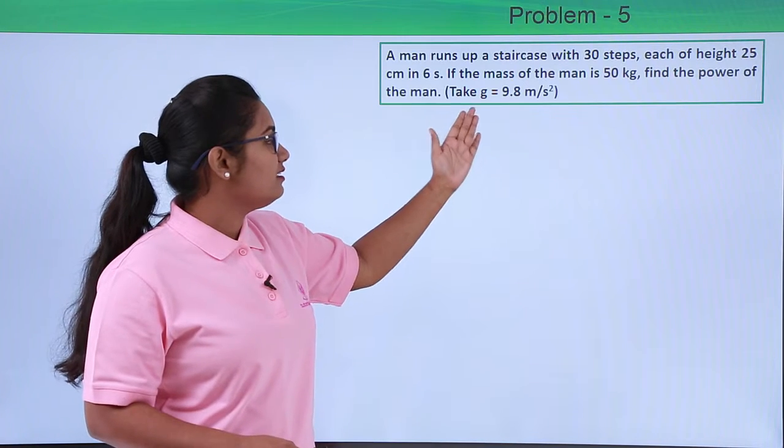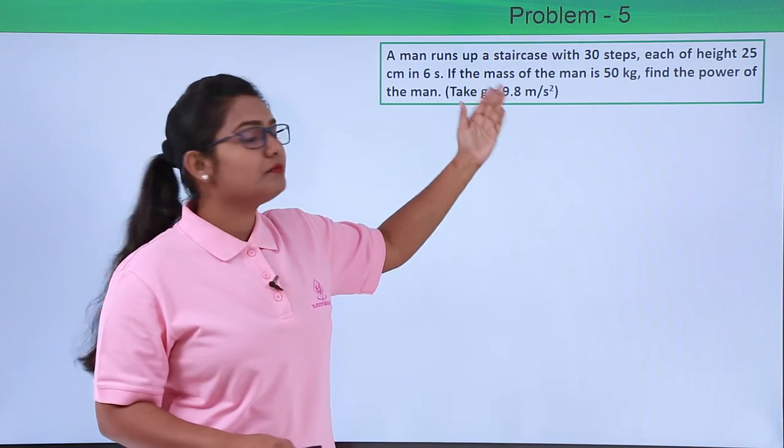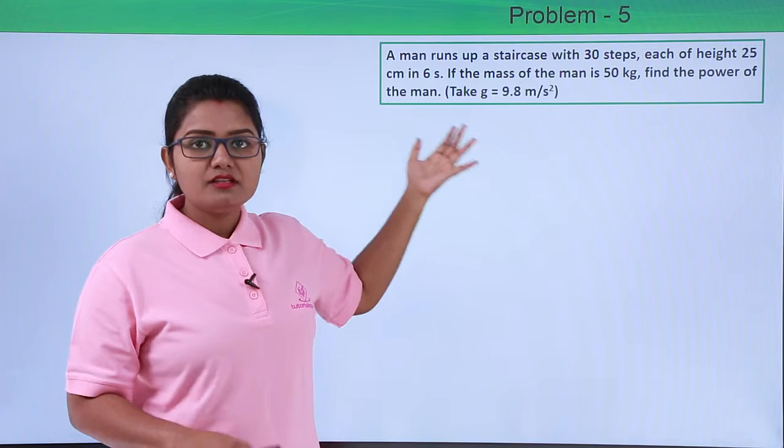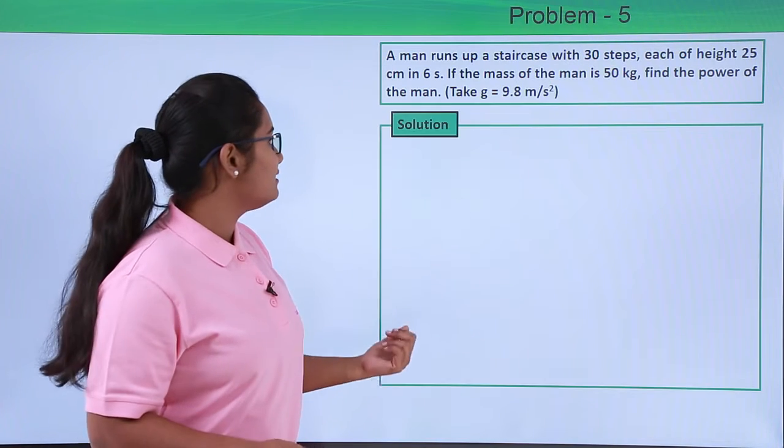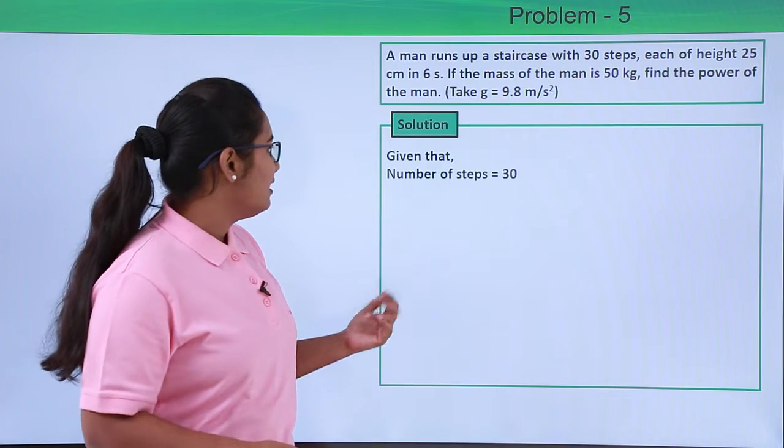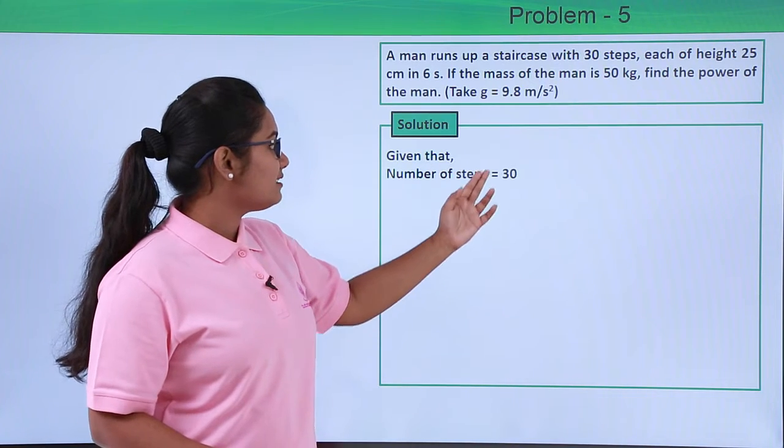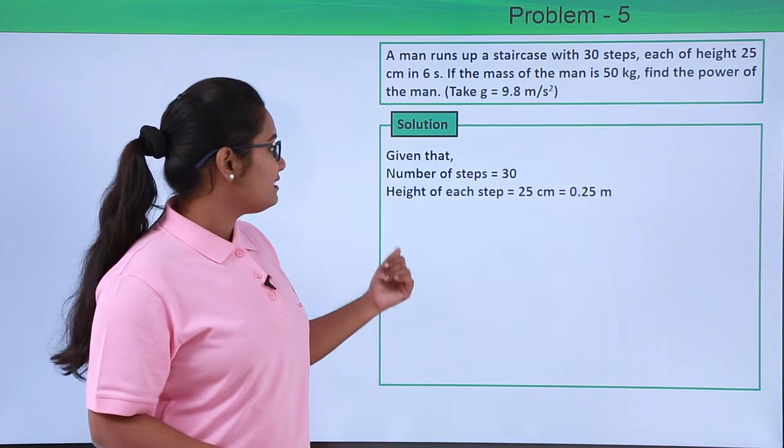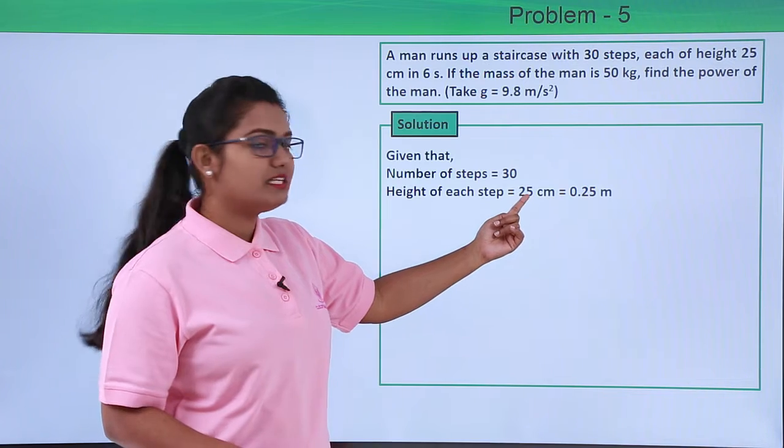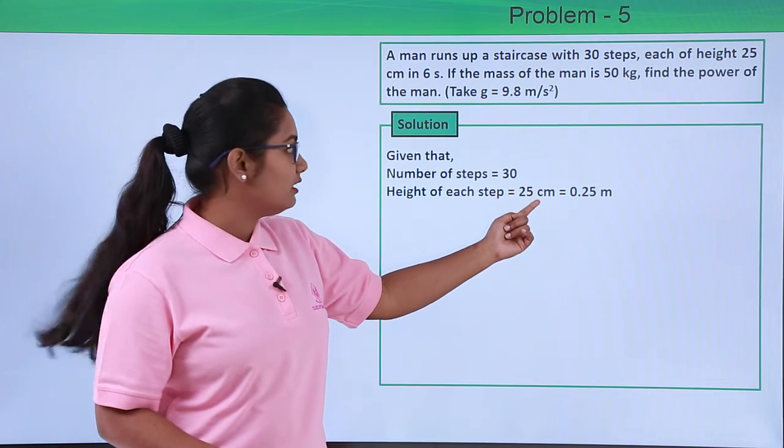We need to take g value to be 9.8 meters per second squared. So to solve the problem, first of all let us list out whatever is given in the question. The number of steps in the staircase is given to be 30, and each step has a height of 25 centimeters, which on converting to meters